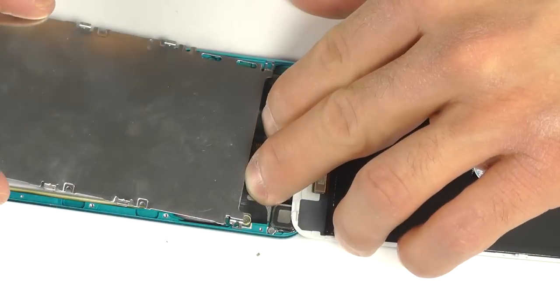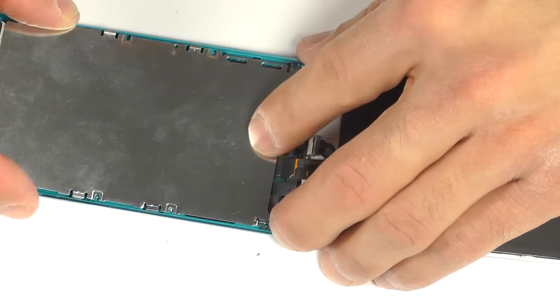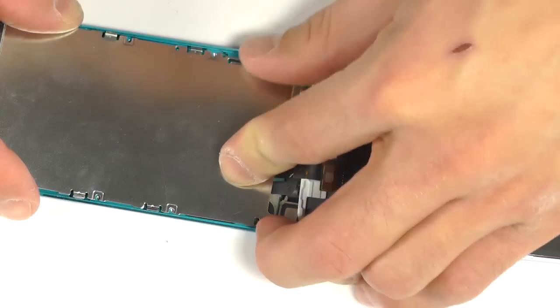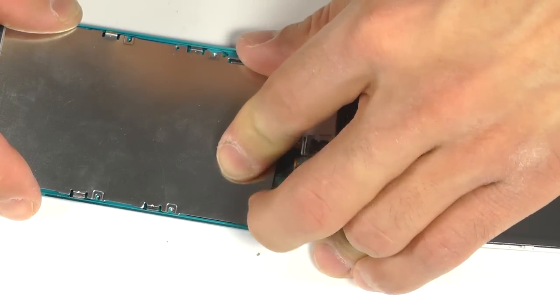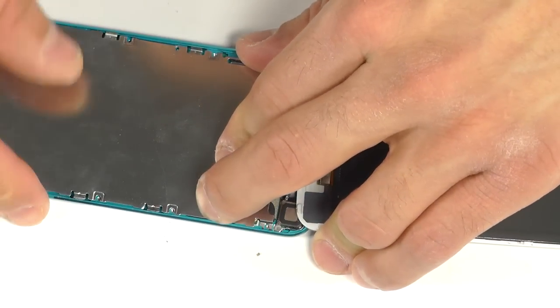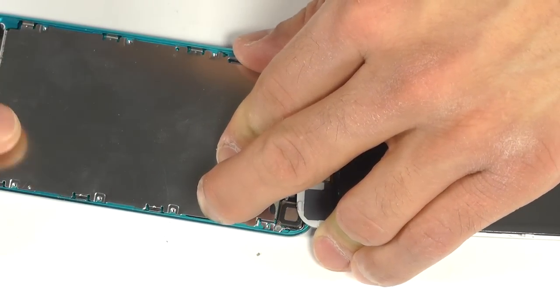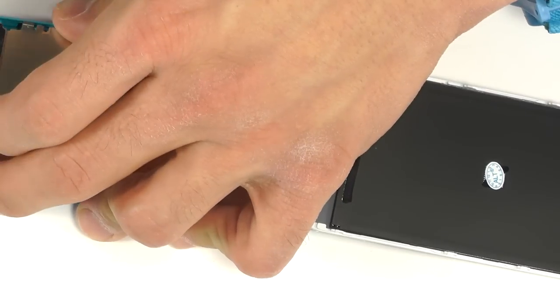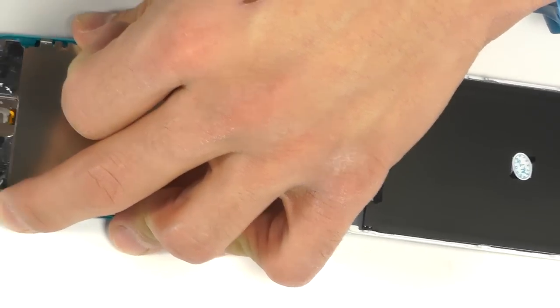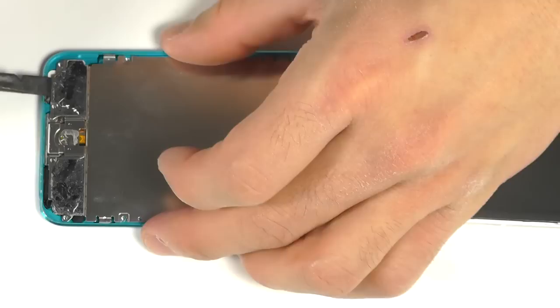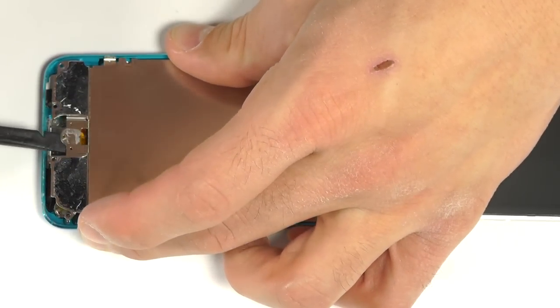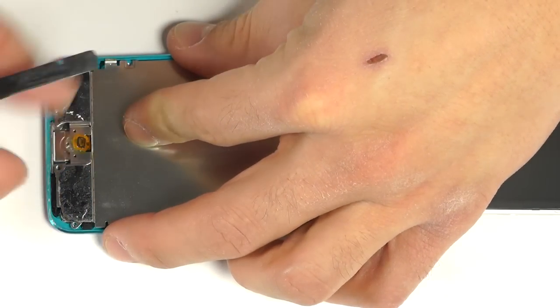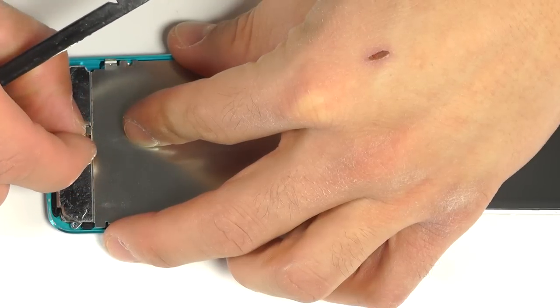Let's now bring in the metal protective plate over top of our motherboard and battery. Don't forget to fish through the ribbon cable for the home button towards the bottom of the iPod before securing it with the 12 Phillips screws.